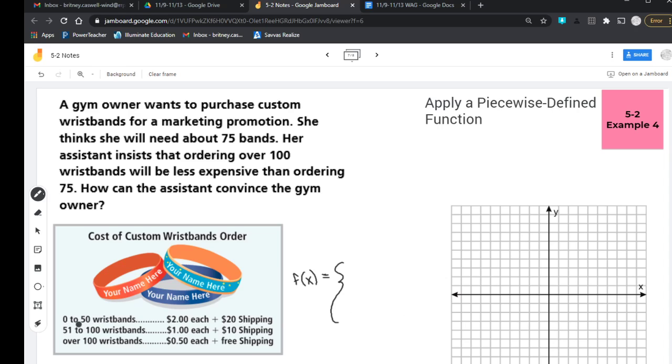Now the first equation is going to have the domain from 0 to 50. So the way I'm going to write that is I'm going to write 0 is less than or equal to x is less than or equal to 50, like that. There's a comma too.